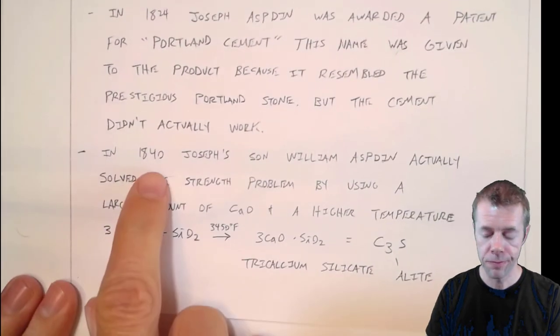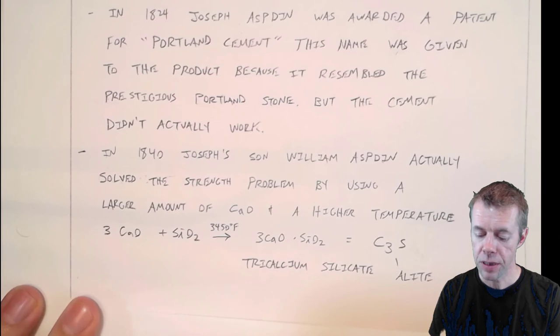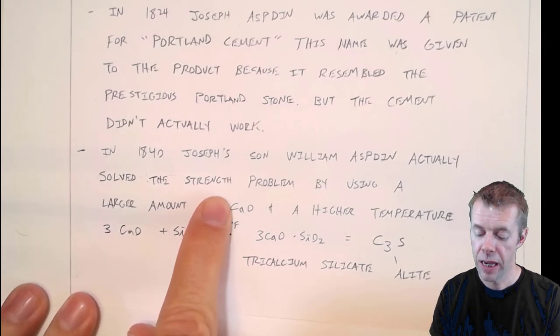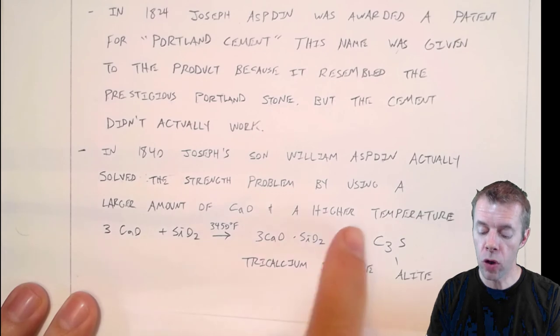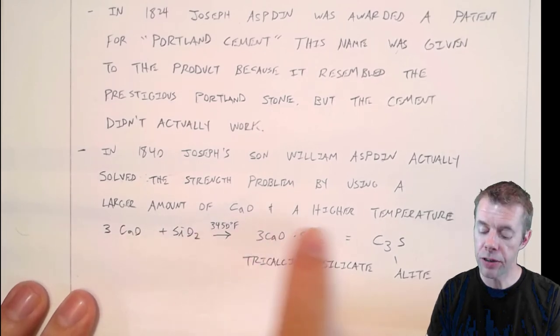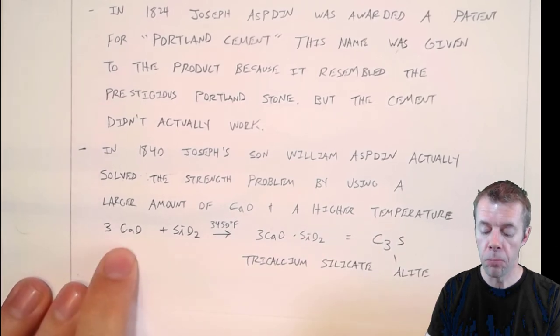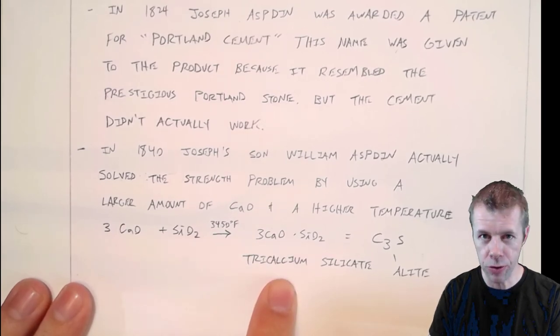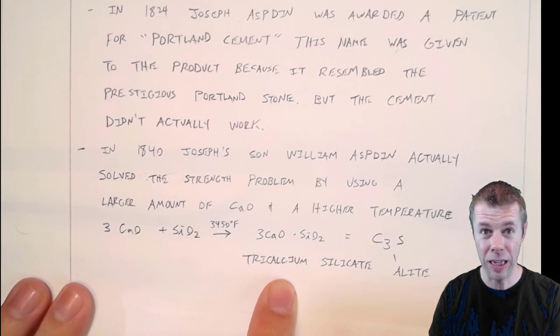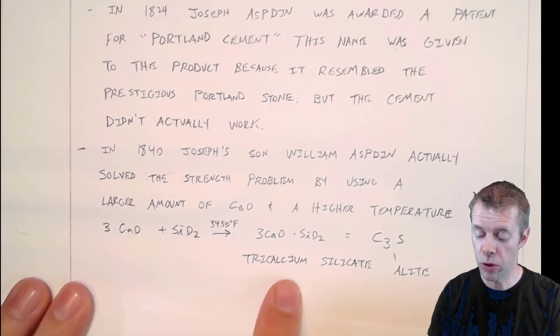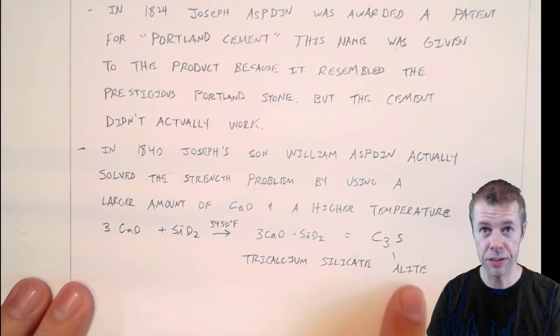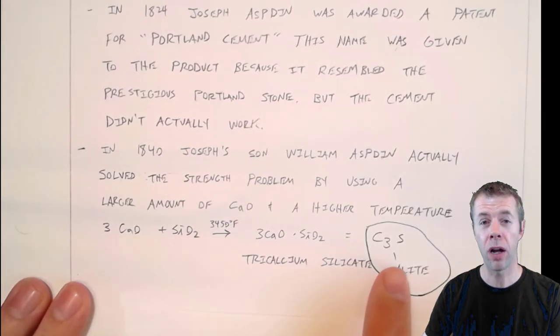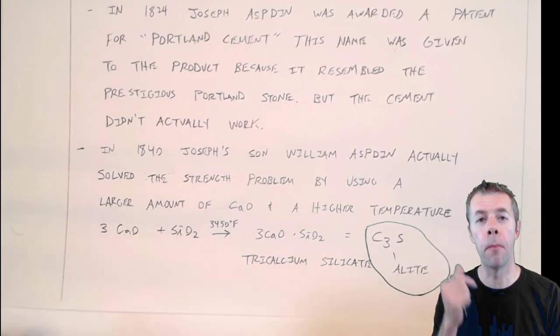But in 1840, Joseph's son, William Aspiden, actually solved this problem. He actually finally made a material that would gain strength at a rapid rate by using a larger amount of lime and higher temperatures. So he used more lime, higher temperature, and he produced something called tricalcium silicate. Did he know what he was doing? No. He was just trying stuff. He got lucky. He produced tricalcium silicate, which we call C3S. And this, ladies and gentlemen, is also called alite. And this, this is the building block, the main reactive component of our modern cements today.